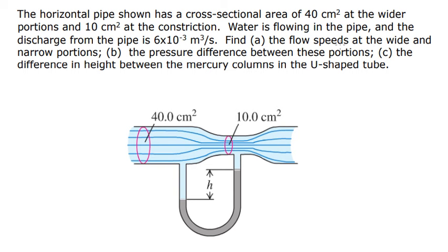A. We need to find the speed at the wide and narrow portions. B. The pressure difference between these portions. And the last one, the difference in the height between the mercury columns. That's about this one here.